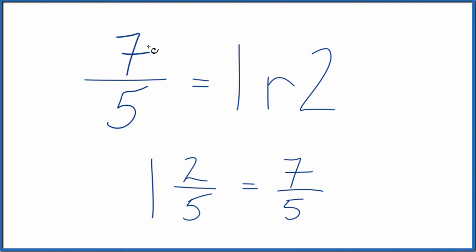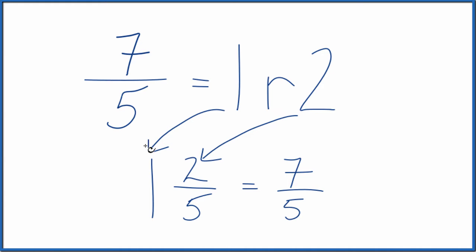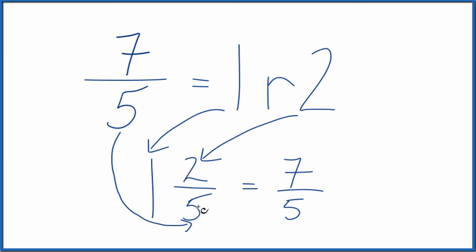So to recap, we divided 7 by 5. We got 1 remainder 2. 1 is the whole number. 2, the remainder, becomes the numerator. And then the denominator from the original fraction, 7 fifths, becomes our denominator down here. So the fraction 7 fifths equals the mixed number 1 and 2 fifths.